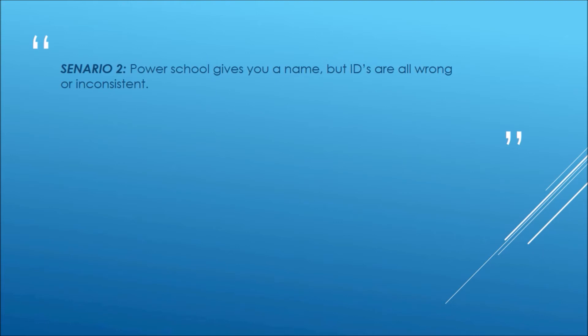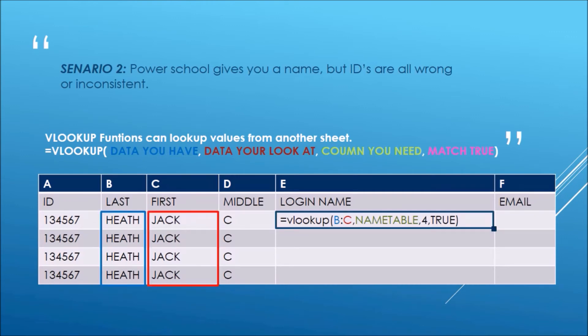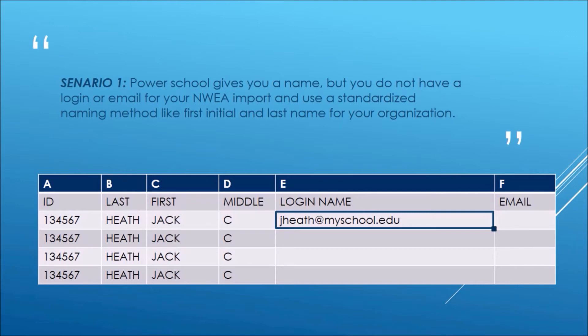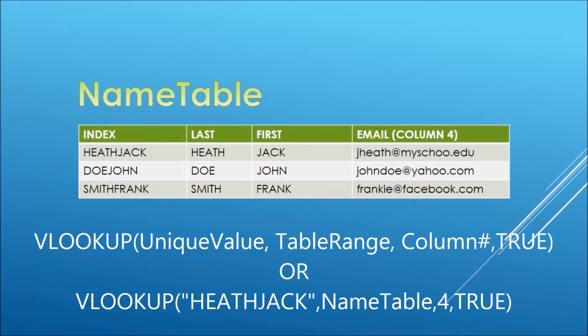Here's another scenario: PowerSchool gives you a name, but the IDs are all wrong or inconsistent. VLOOKUPs allow you to look up data in another table and plug in the information you have there. Assume we have a table called NAME TABLE — the formula would give you an email address, find an ID, or find a login name. We can copy the formula the same way as before and it will automatically adjust. For this to work, you need a name table. In our case, the index value is last name first, so it's unique — last name, first name, and the fourth column is the email. The last part of the VLOOKUP where you write 'true' is for an exact match, and that's important so you don't get bad data.